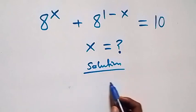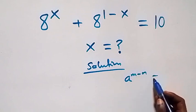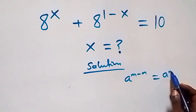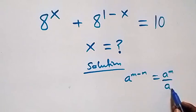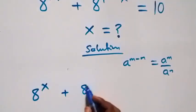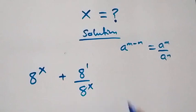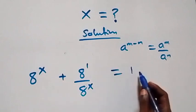Let's apply the law of indices: when we have a raised to power m minus n, it is the same thing as a raised to power m divided by a raised to power n. What we have here becomes 8 raised to power x plus 8 raised to power 1 over 8 raised to power x, which is equal to 10.